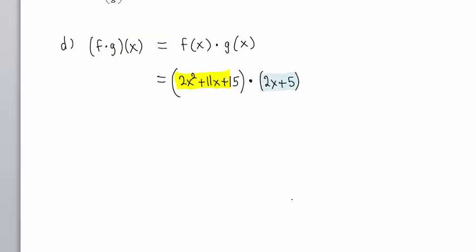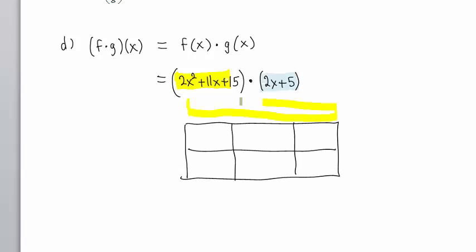There are a number of ways to do this multiplication. Let me show you the box method. Across the top, I will put 2X squared, positive 11X, and 15. Going down, I will put 2X and positive 5.